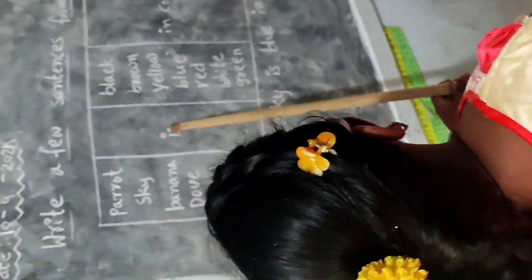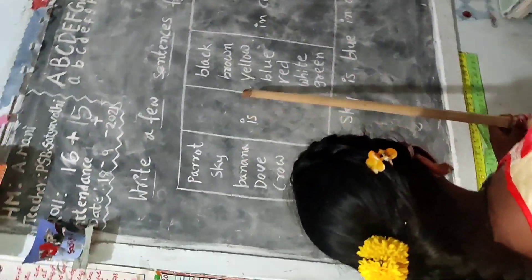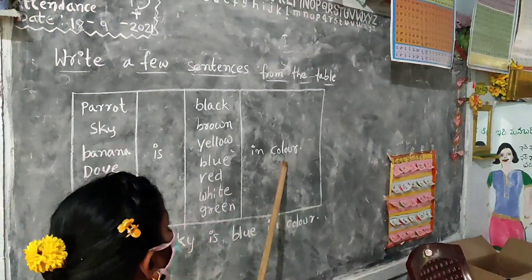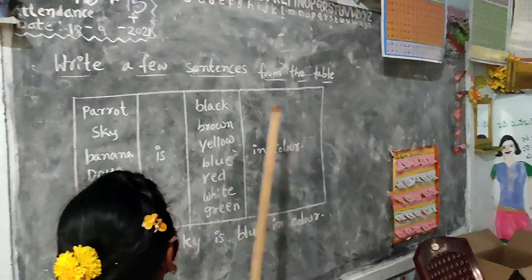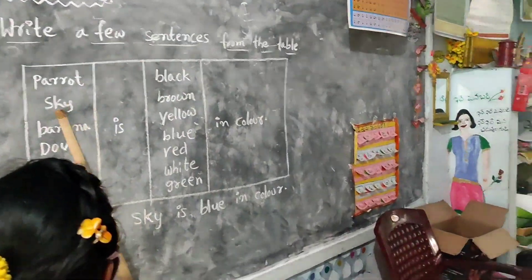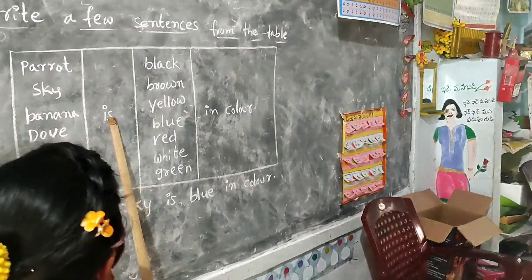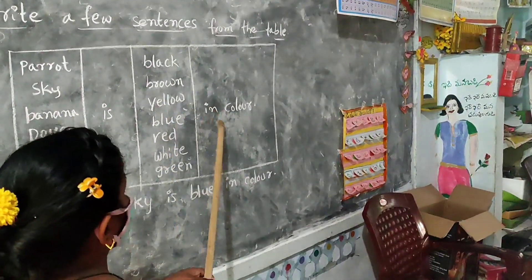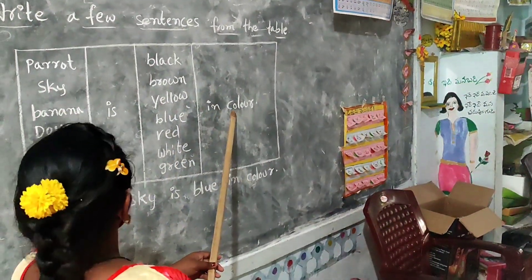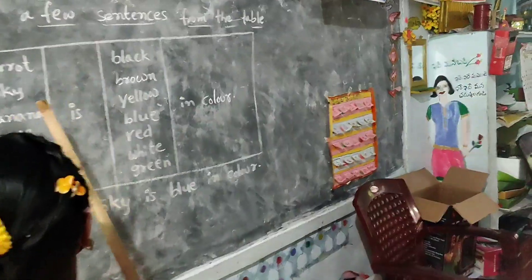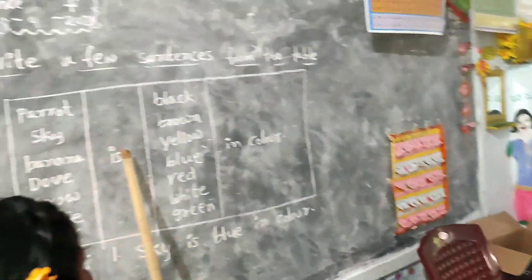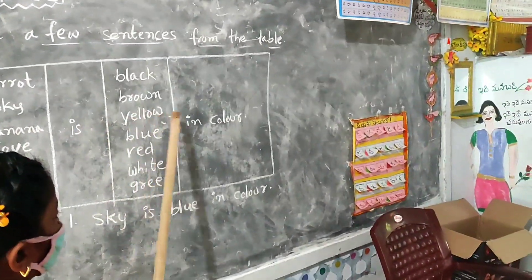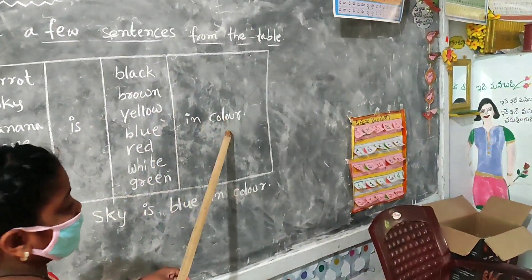Grass is green in colour. Kay is blue in colour. Banana is yellow in colour.